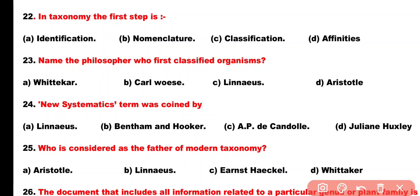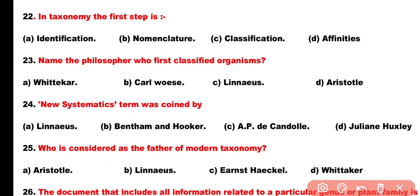Question number 23. Name the philosopher who first classified organisms: Option A: Whittaker, Option B: Carl Woese, Option C: Linnaeus, Option D: Aristotle. Correct answer is Option D. Aristotle first classified organisms into two groups — plants and animals.